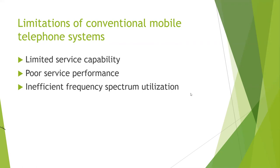So what are those limitations? They are limited service capability, poor service performance, and inefficient frequency spectrum utilization. When we look at limited service capability, a conventional mobile telephone system is usually designed by selecting one or more channels from a specific frequency allocation for use in autonomous geographic zones.